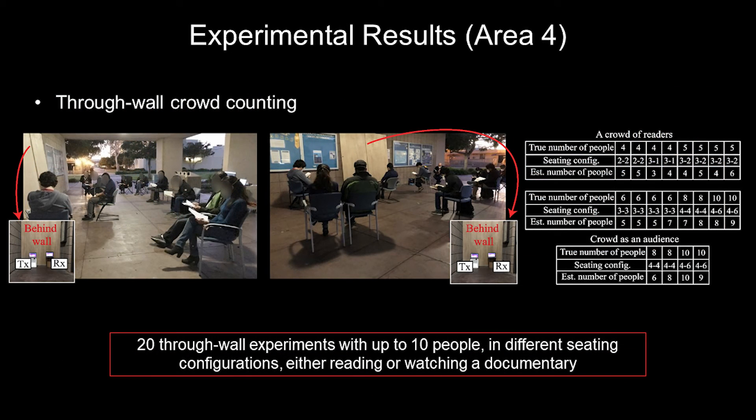Finally, in this location, we placed the WiFi link behind the wall to show that our method can still detect the crowd fidgeting data and consequently count the number of people even through walls.